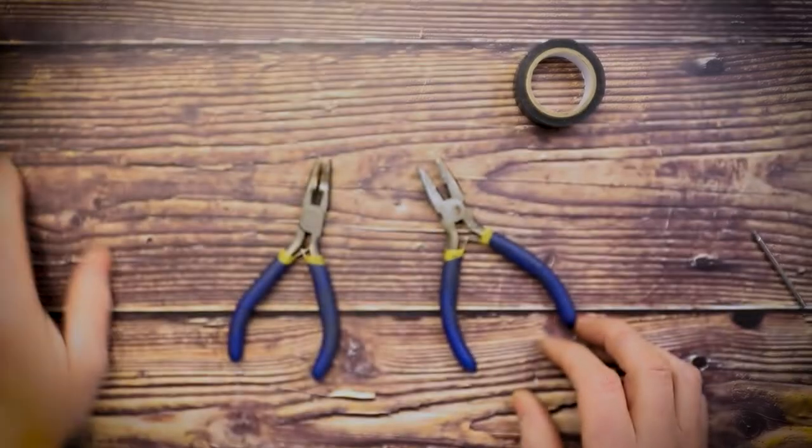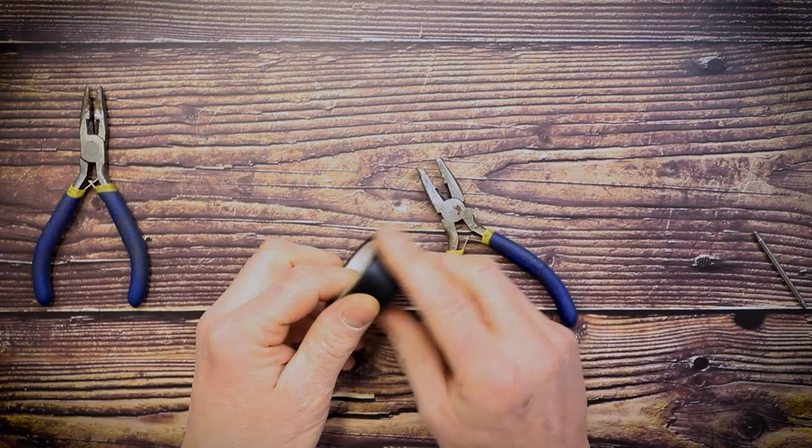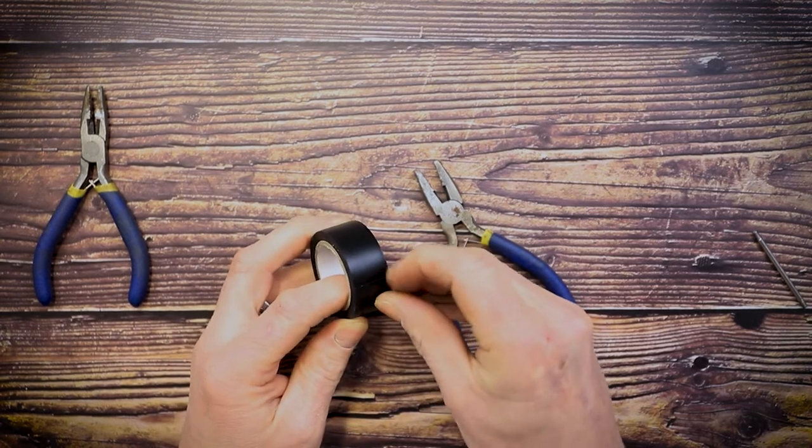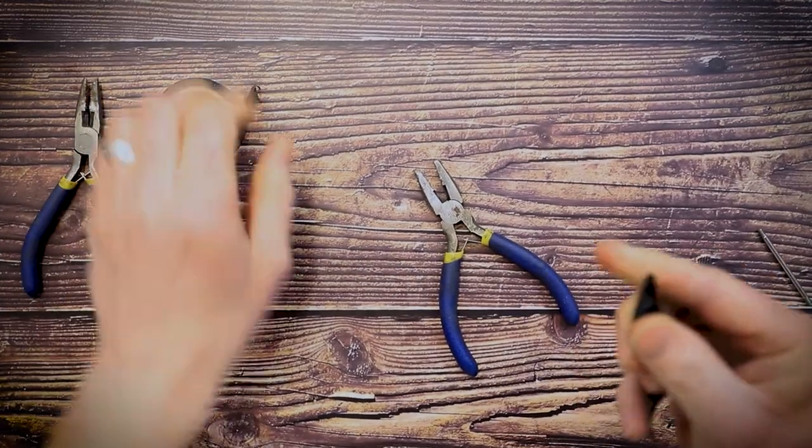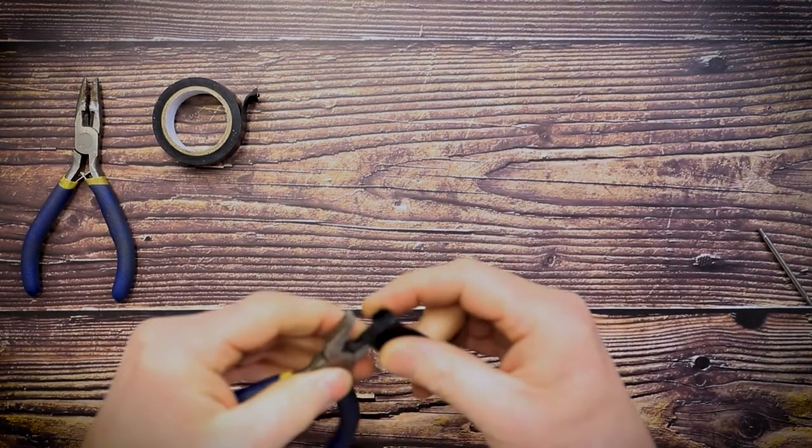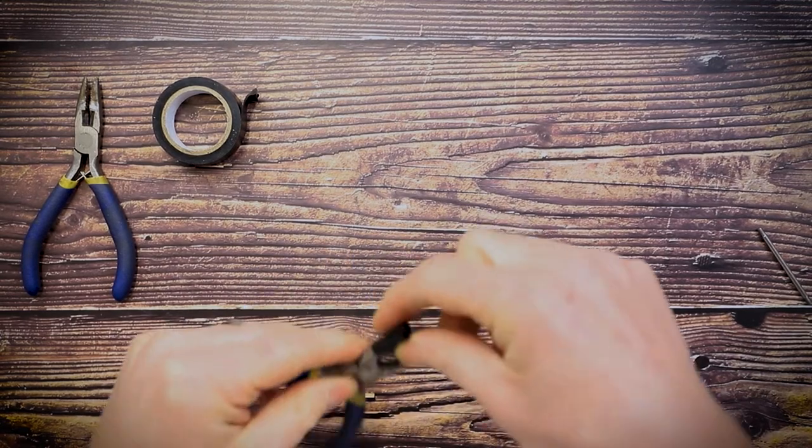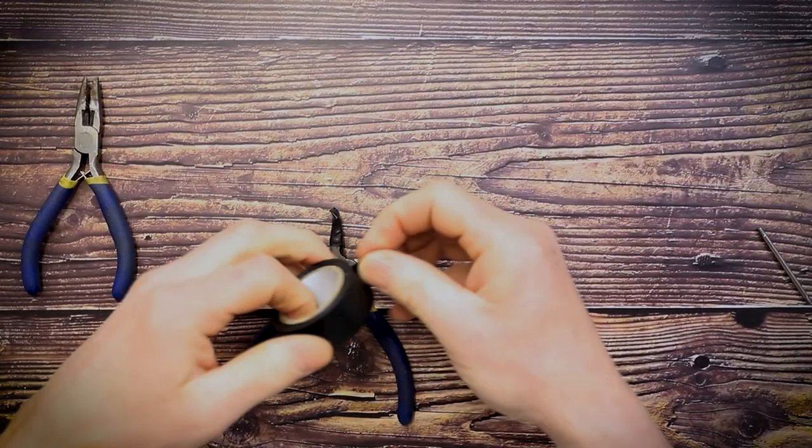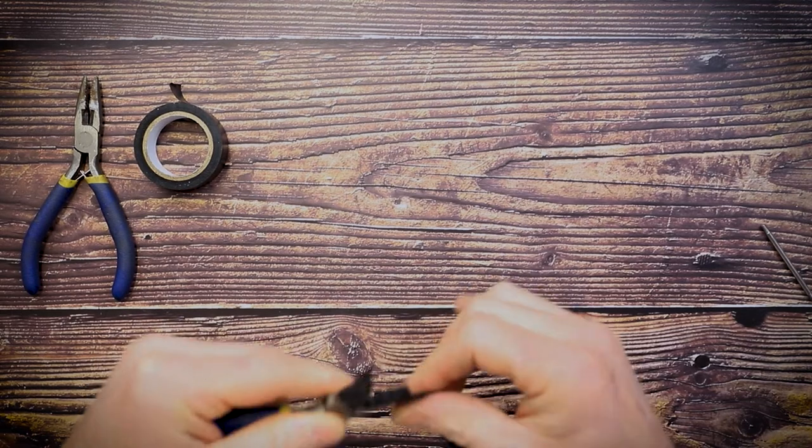Moving on to the pliers, I'm going to take my electrician's tape. It's quite plasticky and I like it a lot because it has good grip. I'm going to tear a piece off that is no more than 10 centimeters long and wrap and protect the teeth on this small pair of pliers. That is essential.